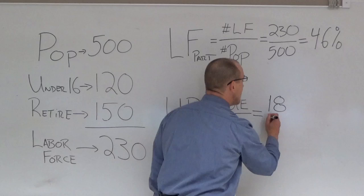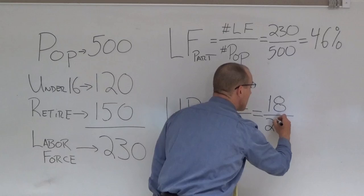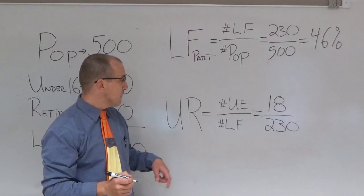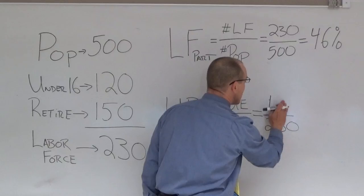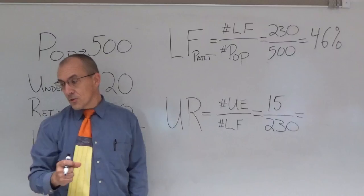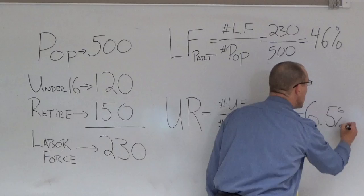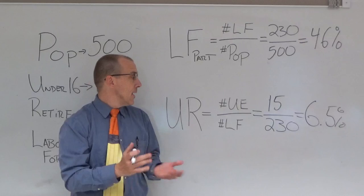The problem tells us that the number of unemployed people is 15, and our labor force is 230. So our calculation of unemployment is to look at the number of unemployed people divided by the labor force. In this case, our unemployment rate comes out to 6.5 percent.